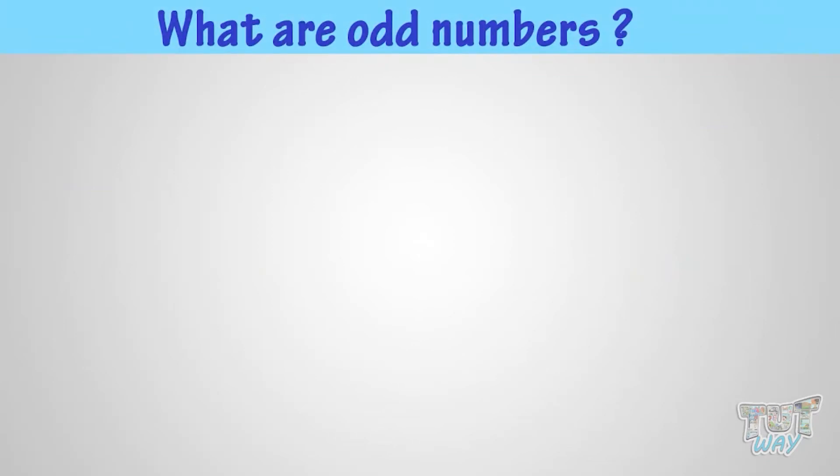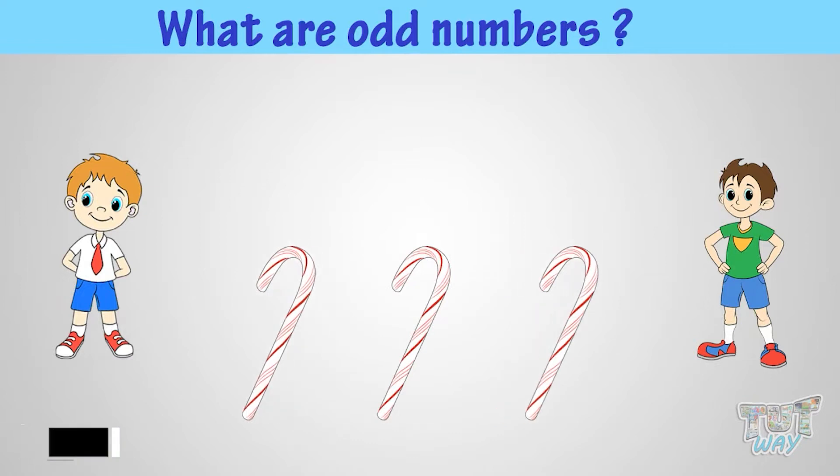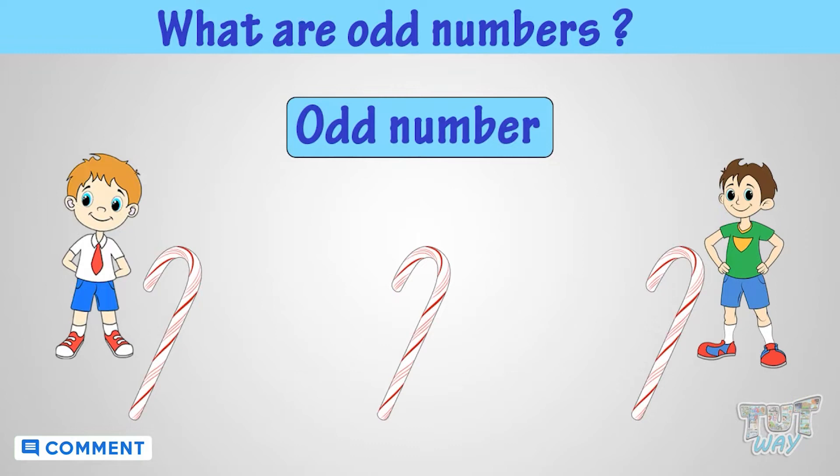What are odd numbers? It's exactly the opposite of even numbers. That is, if you cannot share a number of things equally between the two, they are odd number of things. Let's take a few examples.